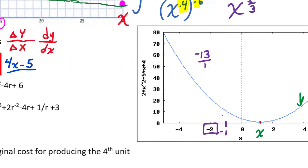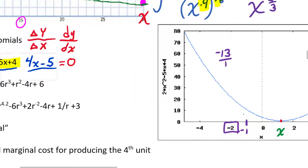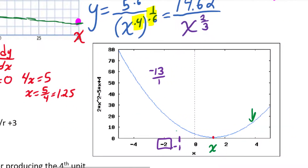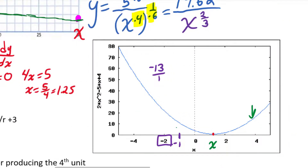To find where the curve is at its minimum, we set the derivative equal to zero and solve for x. Going back to our derivative function and setting it equal to zero: 4x - 5 = 0. Adding 5 to both sides gives us 4x = 5.